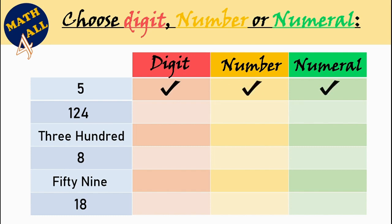What about one hundred twenty-four? Is it a digit? No. It's a three digit. So, we are not gonna choose digit. Is it a number? Yes. Is it a numeral? Yes. It's a symbol or name.